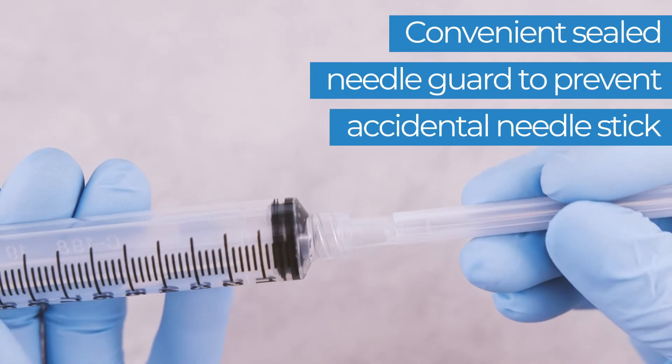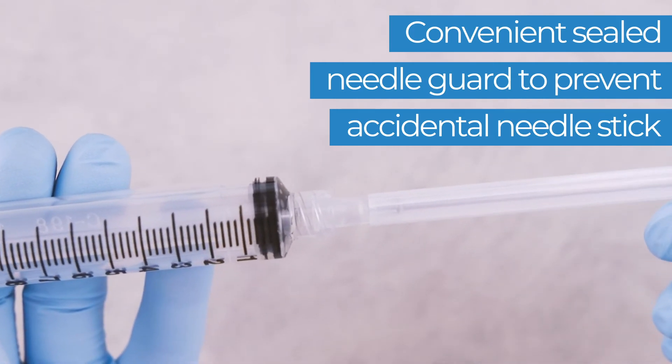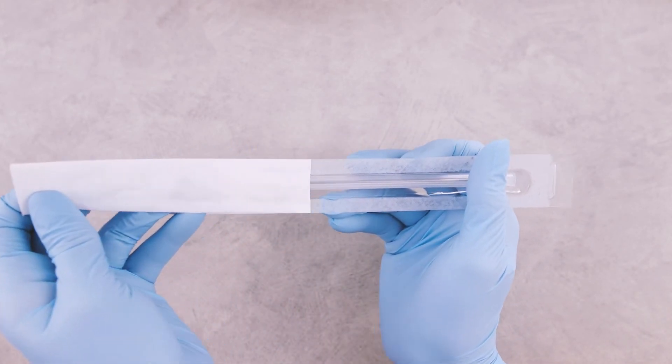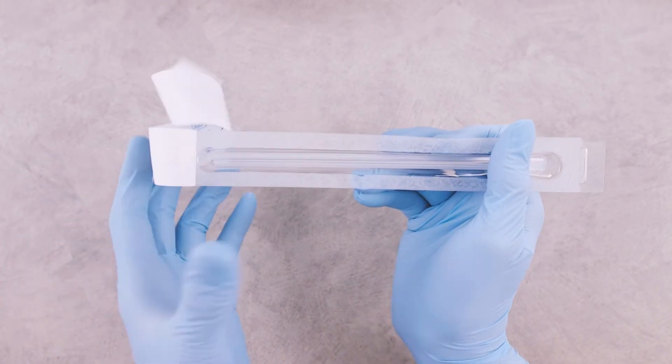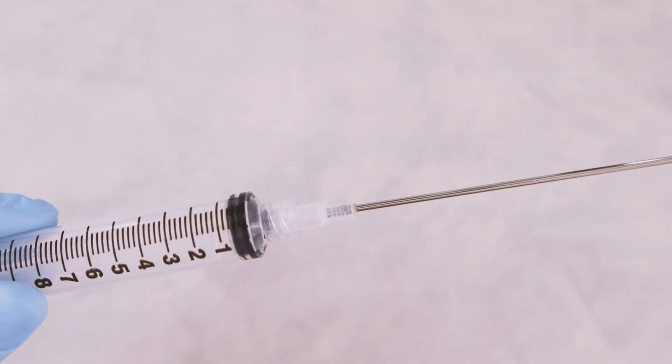Each needle in the R-Extract line comes with a convenient sealed guard to enhance pharmacist and clinician safety. To use, simply remove the needle from its sterile package using aseptic technique. Attach the needle to your syringe, then remove the needle guard using a twisting motion.